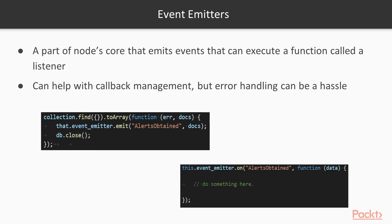However, error handling can be a little bit tricky here. First, you can see we have a collection call — a call to MongoDB to find something from a collection with an empty query, converting it to an array. When it is completed, it triggers a function where the callback occurs. When the find method is completed, this event emitter emits an event called 'alerts obtained'. Down here we have an event emitter with the 'on' handler that listens for events. When 'on' finds that the 'alerts obtained' event has been emitted, it triggers a function where we perform an action.